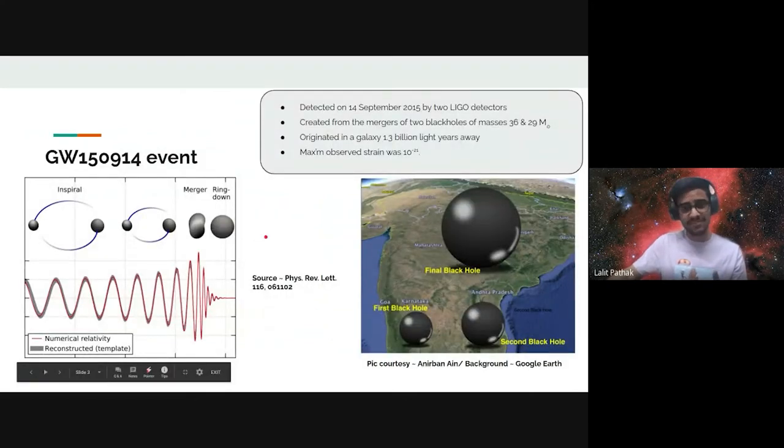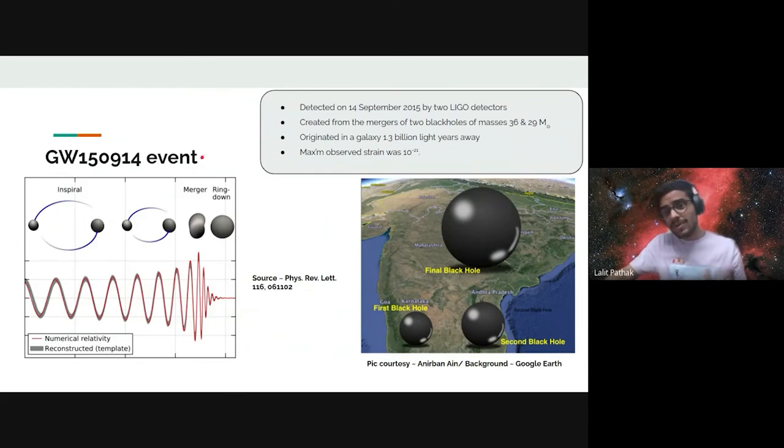Now, let us talk about the event. The event GW150914 was detected on September 14, 2015 by two LIGO detectors, one in Hanford, Washington, and the other in Livingston, Louisiana, both in the United States. If you look carefully, the event is named after the detection date.